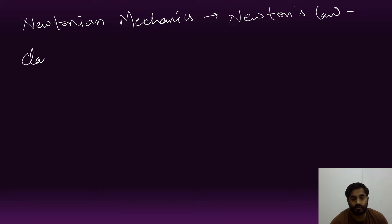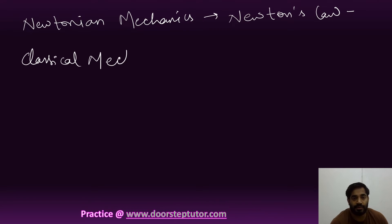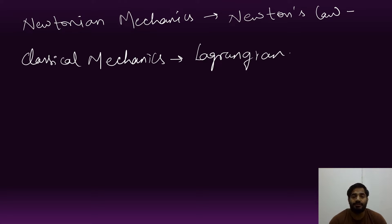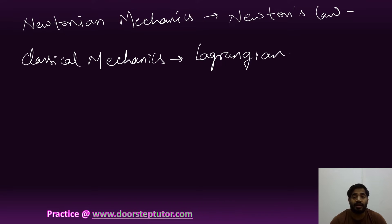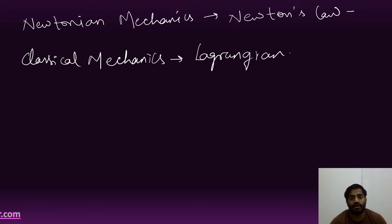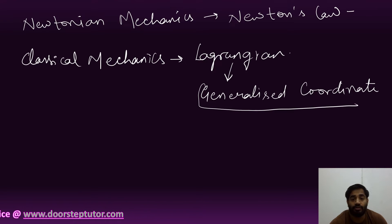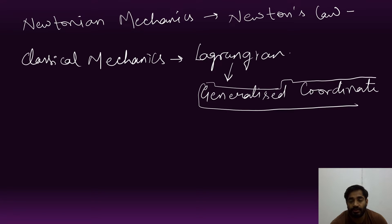Similarly, for classical mechanics, there is a replacement of Newton's law, and this replacement is by the Lagrangian. In Lagrangian mechanics, Newton's law is about force, mass, acceleration, and rate of change of momentum. But in Lagrangian mechanics, there is a generalized coordinate used to represent the equation of motion. This concept of Lagrangian is applicable for all dynamical problems in mechanics.